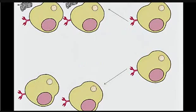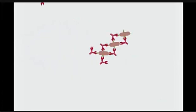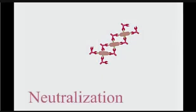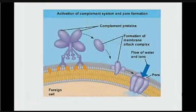Plasma B-cells are short-lived and release antibodies that target the antigens. There are several ways antibodies can inactivate antigens. One way is neutralization, in which antibodies block the antigen's ability to bind to a host cell by binding to the antigens directly.